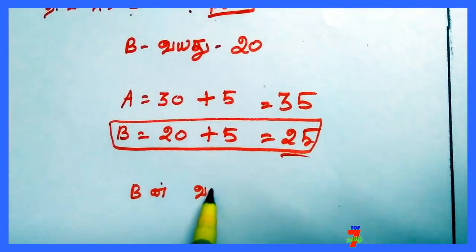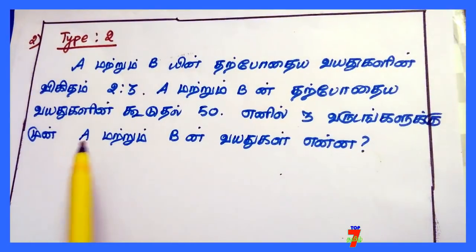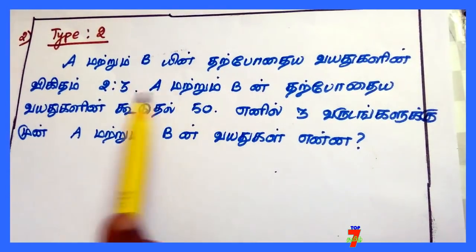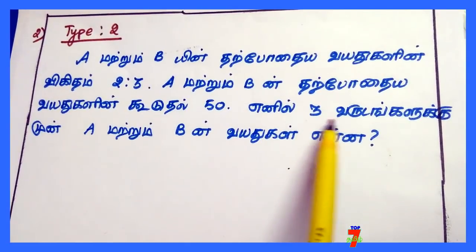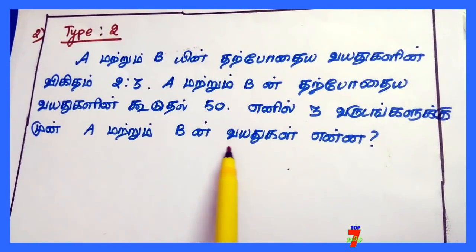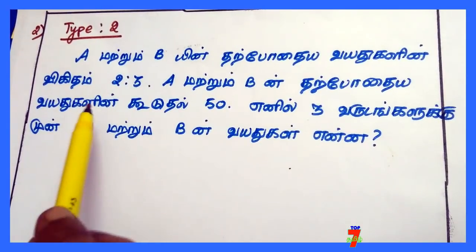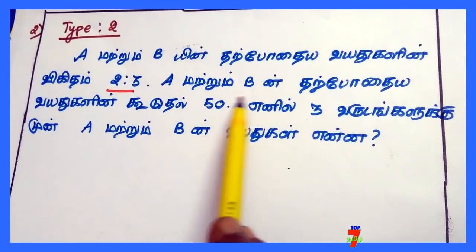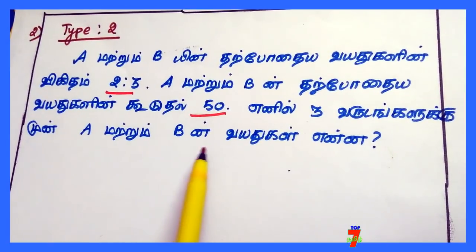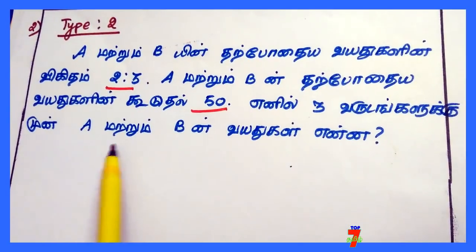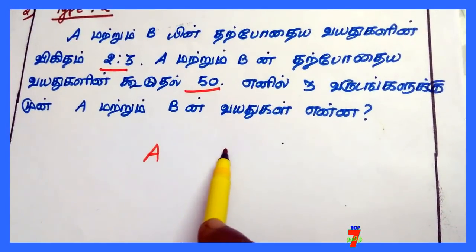B in 5 gives 25. Let's see what we have. We have a big value of A and B. What we have to say is that it equals 3. We have a big value of A and B.